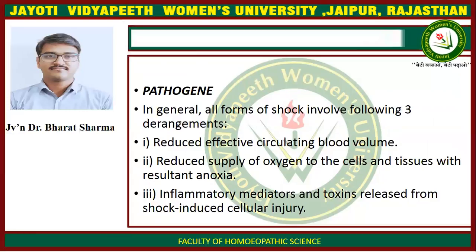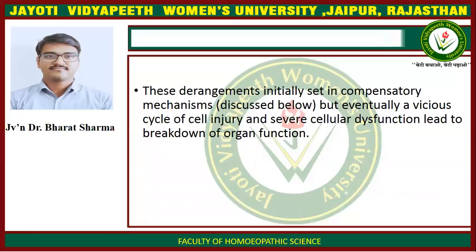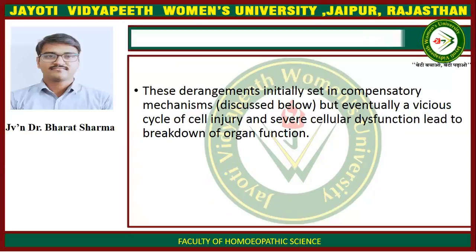These three derangements are: reduced effective circulating blood volume; reduced supply of oxygen to the cells and tissues with resultant anoxia; and inflammatory mediators and toxins released from shock-induced cellular injury. These derangements initially set in compensatory mechanisms, but eventually a vicious cycle of cell injury and severe cellular dysfunction leads to breakdown of organ function.